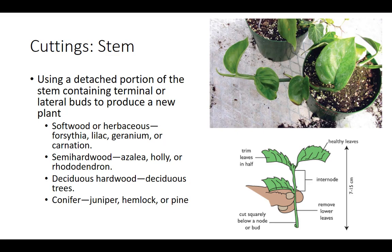Examples of plants produced by the different types of cutting material include the following: softwood or herbaceous stems from forsythia, lilac, geranium, or carnation; semi-hardwood from azalea, holly, or rhododendron; deciduous hardwood from hardwood trees; and conifer stems from juniper, hemlock, or pine.